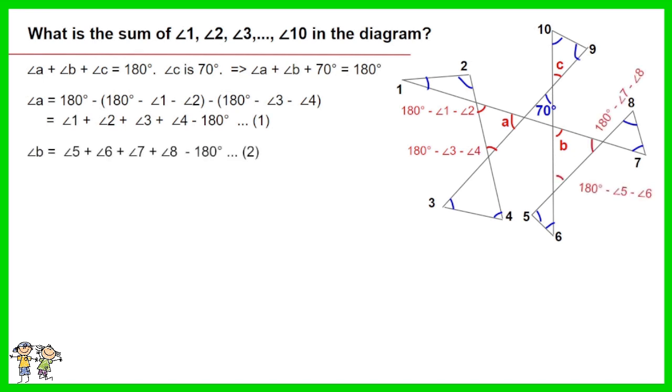Angle B is equal to sum of angle 5 to 8 minus 180. This is your equation 2. Sum of angle 9 and 10 is equal to 180 minus angle C, which is 110 degrees. This is your equation 3.